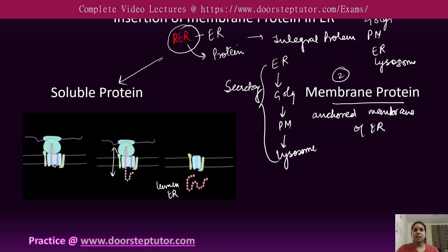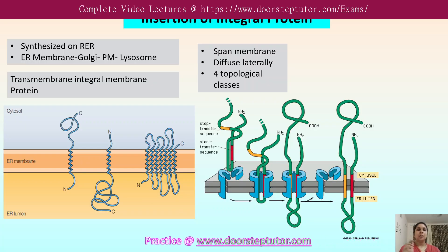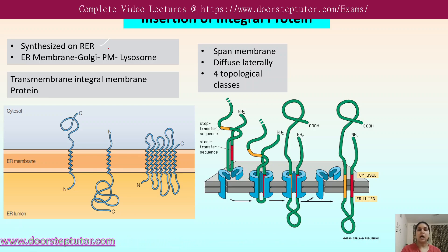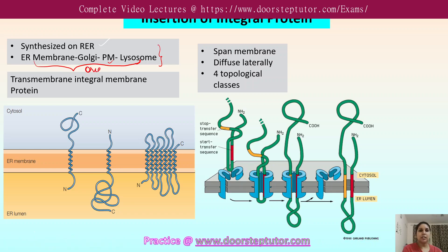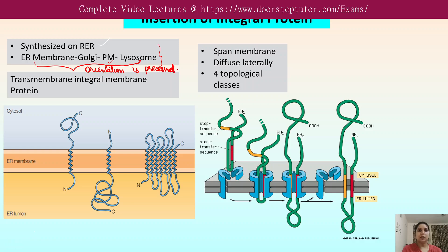Now let's discuss how these membrane proteins get inserted into the endoplasmic reticulum. They are synthesized in the RER and then transported from ER to the Golgi apparatus, plasma membrane, and lysosome. During this transportation — from the ER to the plasma membrane and lysosome — the orientation of the membrane protein is preserved. This is very important.